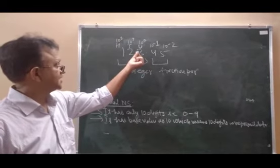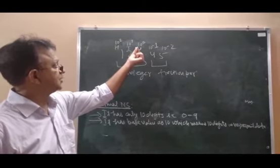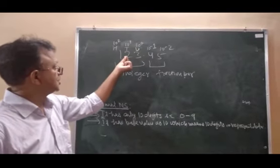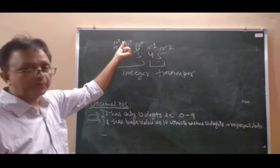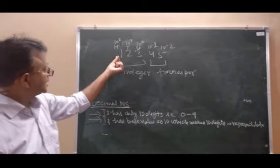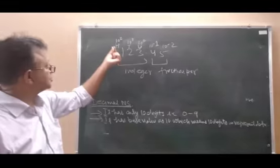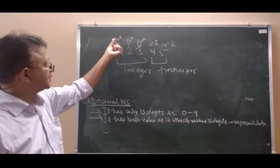3 is on units place, so its positional value is 10 raised to the power 0. 2 is on 10th place, whose positional value is 10 raised to the power 1. 1 is on 100th place, whose positional value is 10 raised to the power 2.